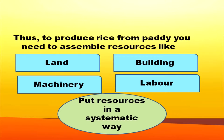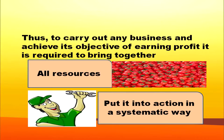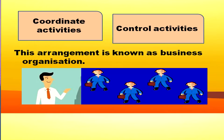To produce rice from paddy, you need to assemble resources like land, building, machinery and labor, then put resources in a systematic way. Only then it becomes possible to produce rice, and the owner can sell it to the consumers in order to earn profit. To carry out any business and achieve its objective of earning profit, it is required to bring together all resources, put them into action in a systematic way, and coordinate and control various activities. This arrangement is known as business organization.